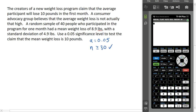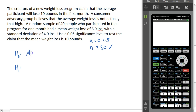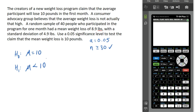All we need to do is write down our hypotheses for this test, then use our calculator to compute the test statistic and the p-value, and then make our decision. The claim is that the average person will lose 10 pounds. The advocacy group believes it's actually going to be lower than that. So our null hypothesis is that mu equals 10, and the alternate hypothesis is that mu is less than 10 — because they believe the weight loss cited is too high. So we are doing a left-tailed test.